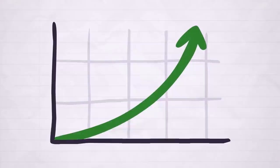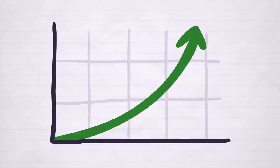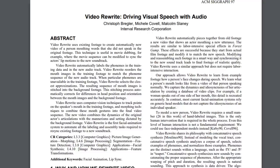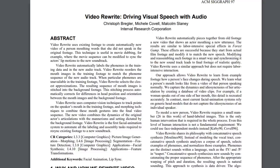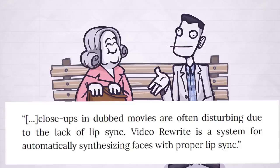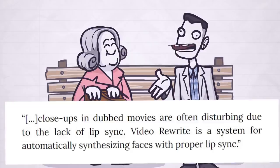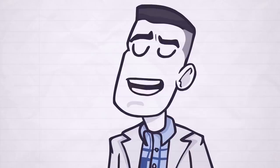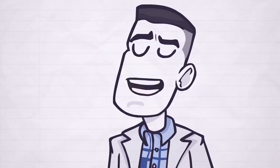So we see how computers got exponentially smarter over the years, and how technology has learned to detect patterns and make choices towards a set goal. But the first time this was applied to speech and human faces was 1997, with a paper titled Video Rewrite: driving visual speech with audio. The authors originally intended to solve the annoying problem of inaccurate mouth movement in cinema, writing that closeups in dubbed movies are often disturbing due to the lack of lip sync. Video Rewrite is a system for automatically synthesizing faces with proper lip sync. With the use of machine learning, the team behind Video Rewrite was able to create new frames and adjust mouth positions into a much more accurate and natural looking synchronization. Although relatively small in scope, this project inspired many others to follow.